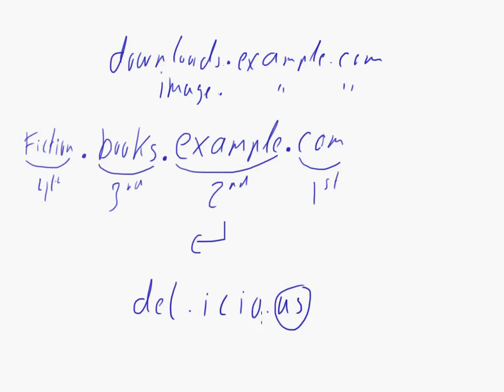Delicious. Basically, this is the first level domain, this is their second level domain, and this is the third level or subdomain they did.